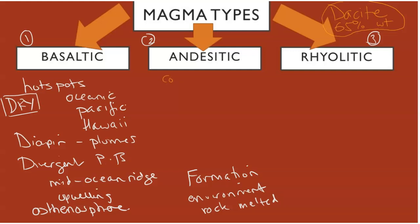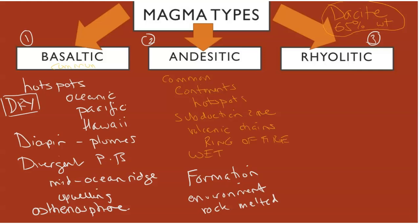Basaltic is very common given the extent of the mid-ocean ridge. Andesitic is also common — it is the typical magma found on continental plates. It forms through continental hot spots, subduction zones, and continental volcanic chains along coastlines, with the Ring of Fire as a great example. This is an example of wet melting — meaning water and other volatiles are included to lower the melting temperature of the rock, bringing it above the geothermal gradient to cross the solidus and liquidus lines and create magma.